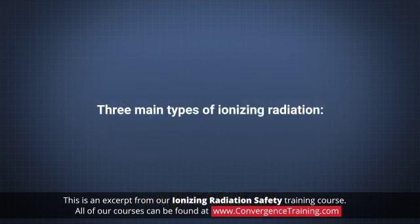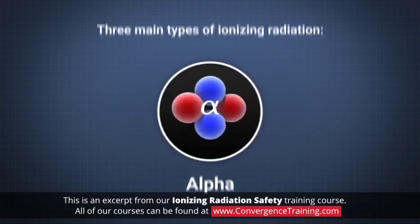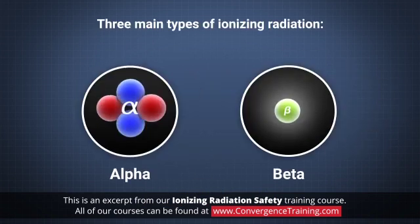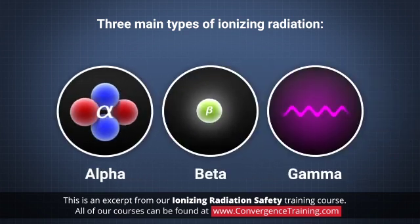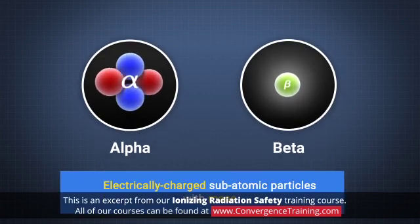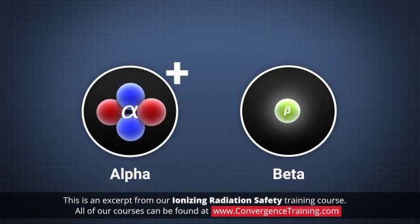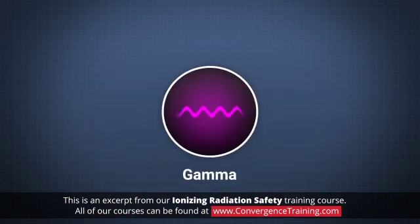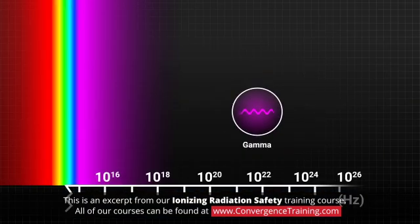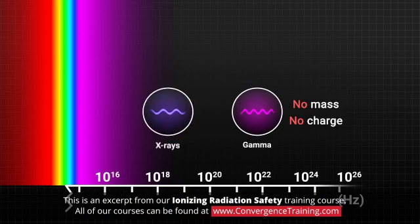The three main types of ionizing radiation are alpha, beta, and gamma. Alpha and beta radiation consist of electrically charged subatomic particles with mass. Alpha particles are positively charged, and beta particles are negatively charged. Gamma radiation is energy transmitted in the form of high-frequency electromagnetic waves that have no mass and no charge, similar to x-rays.